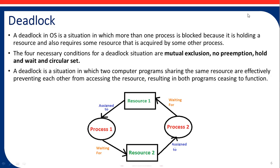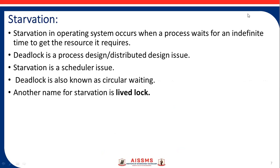Concurrency problems are caused by the following. First, concurrent access to a global resource by multiple processes may lead to unpredictable results. Next, exclusive access to a resource may lead to deadlock. Unpredictable results also make it difficult to locate a programming error in a concurrent application, since the results are not deterministic and reproducible. The next concept is starvation — an operating system condition where a process waits an indefinite time to get the resource it requires. Starvation is a scheduler issue, while deadlock is a distributed design issue. Deadlock is also known as circular waiting, and another name for starvation is livelock.